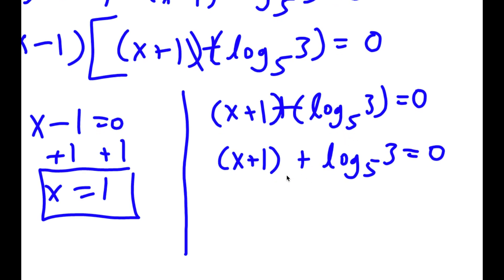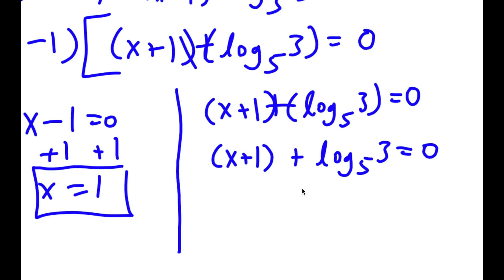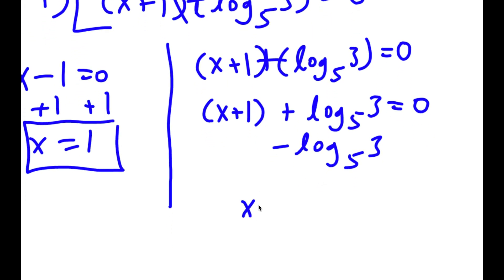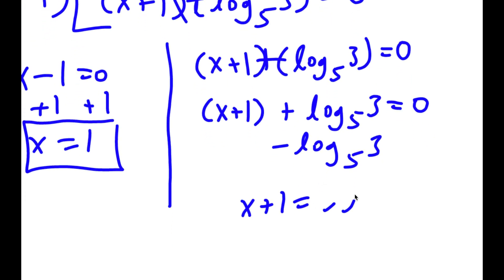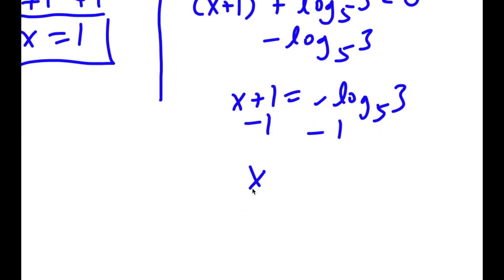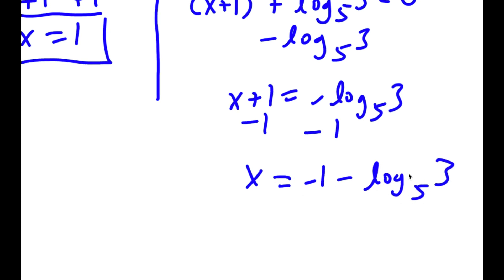So now if I subtract both sides by log base 5 of 3, I get x plus 1 is equal to negative log base 5 of 3. And now I can also subtract 1 on both sides, so I get x is equal to negative 1 minus log base 5 of 3.